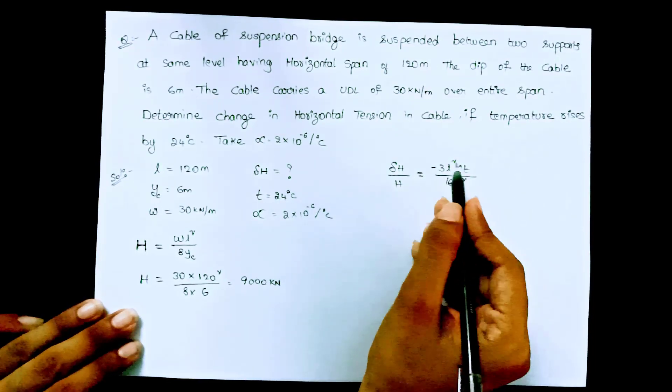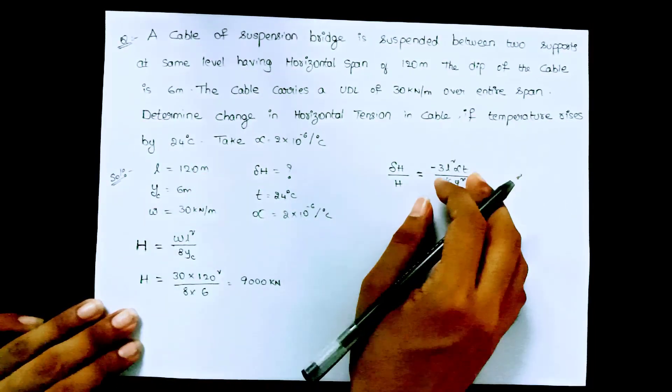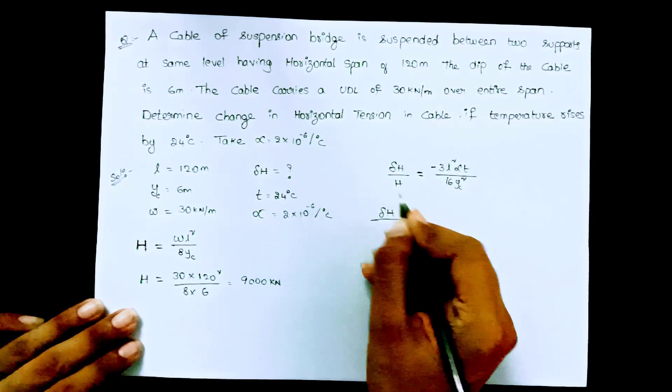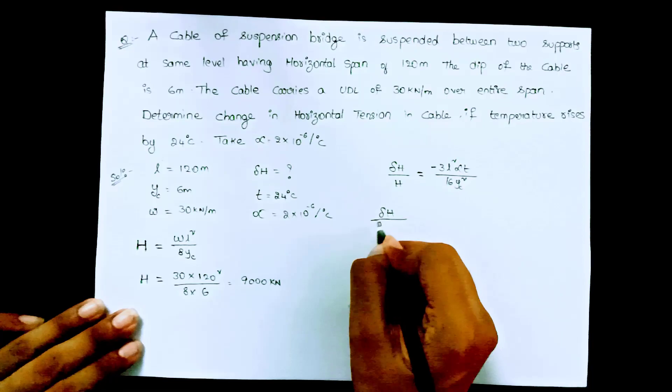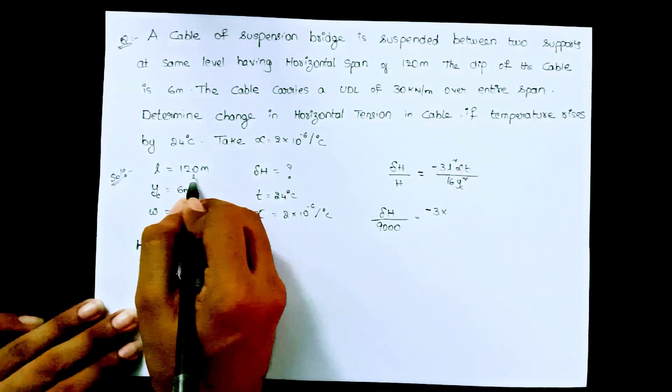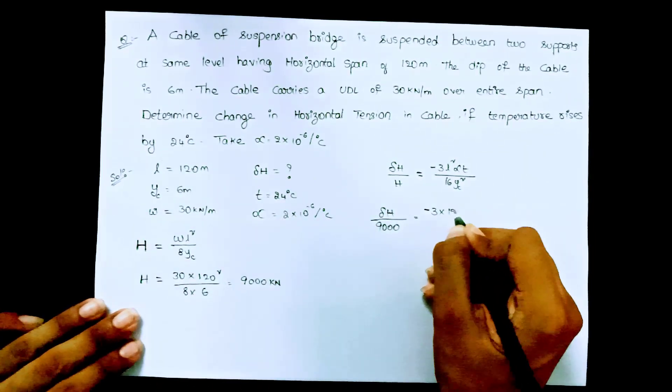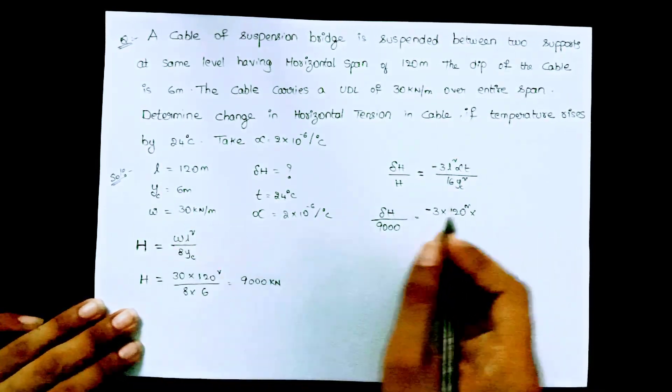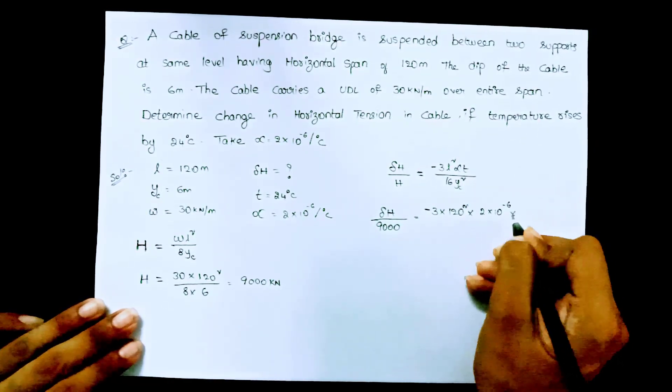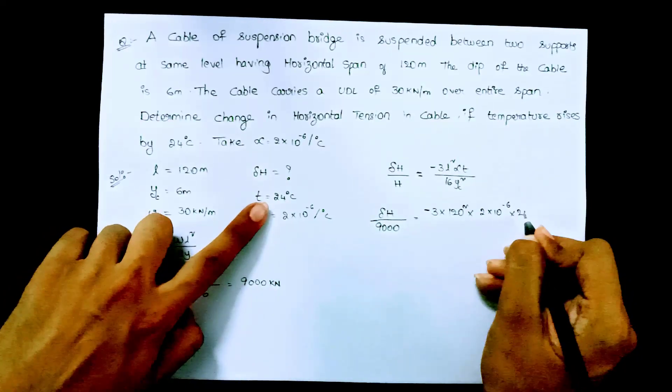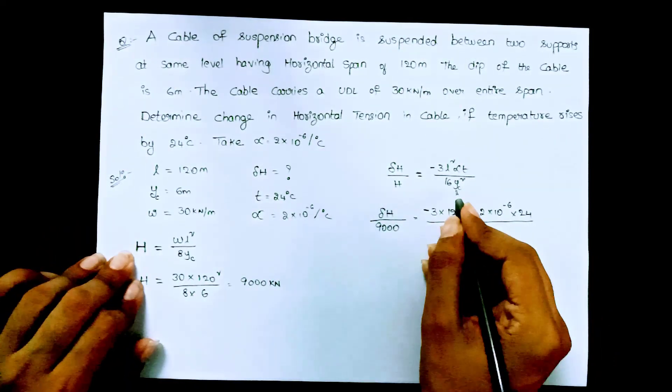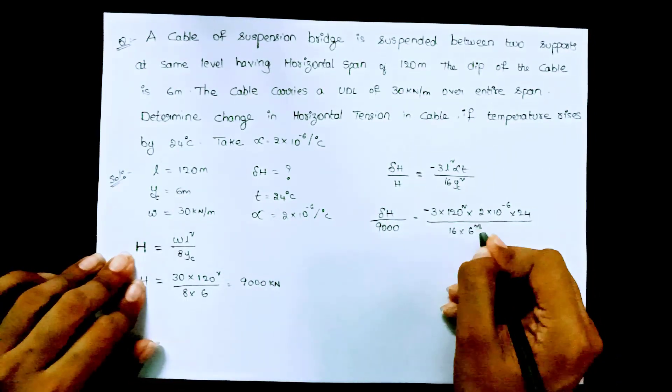Just for now we are directly substituting the given values in this formula. So delta h which we need to calculate divided by h is 9000 equal to minus 3 into l square that means 120 square into alpha given as 2 into 10 power minus 6 and t is 24 degrees Celsius divided by 16 into yc square that means 6 square.